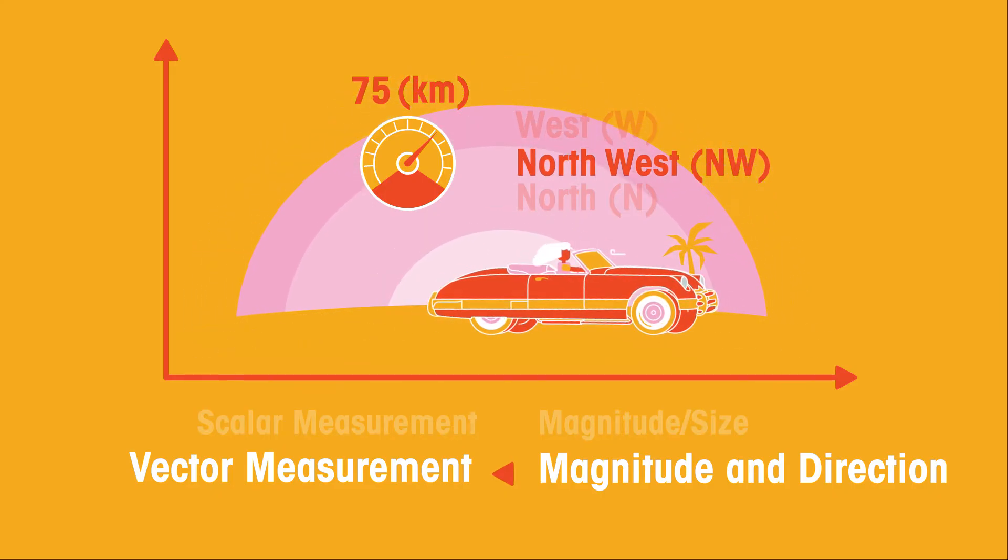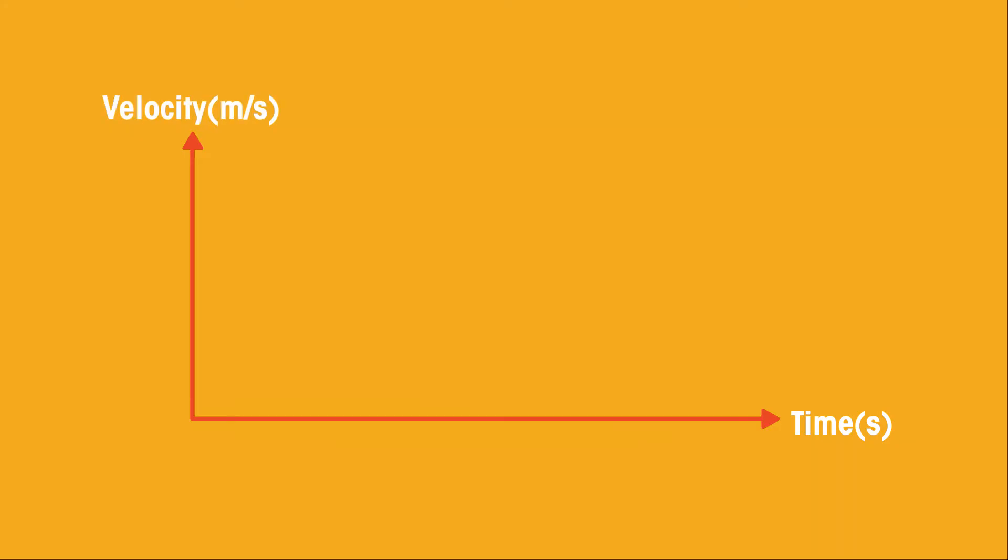Let's have a look at how we can plot information about velocity onto a graph. As always, the time goes on the horizontal x-axis and now the velocity goes on the vertical y-axis as that's what we are measuring.